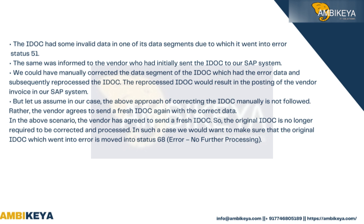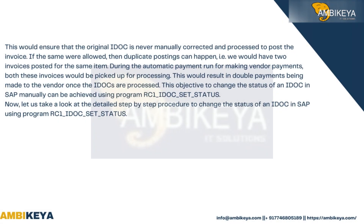Rather, the vendor agrees to send a fresh IDoc again with the correct data. In this scenario, the vendor has agreed to send a fresh IDoc, so the original IDoc is no longer required to be corrected and processed. We would want to make sure that the original IDoc which went into error is moved into status 68 (Error - No Further Processing). This ensures the original IDoc is never manually corrected and processed to post the invoice.